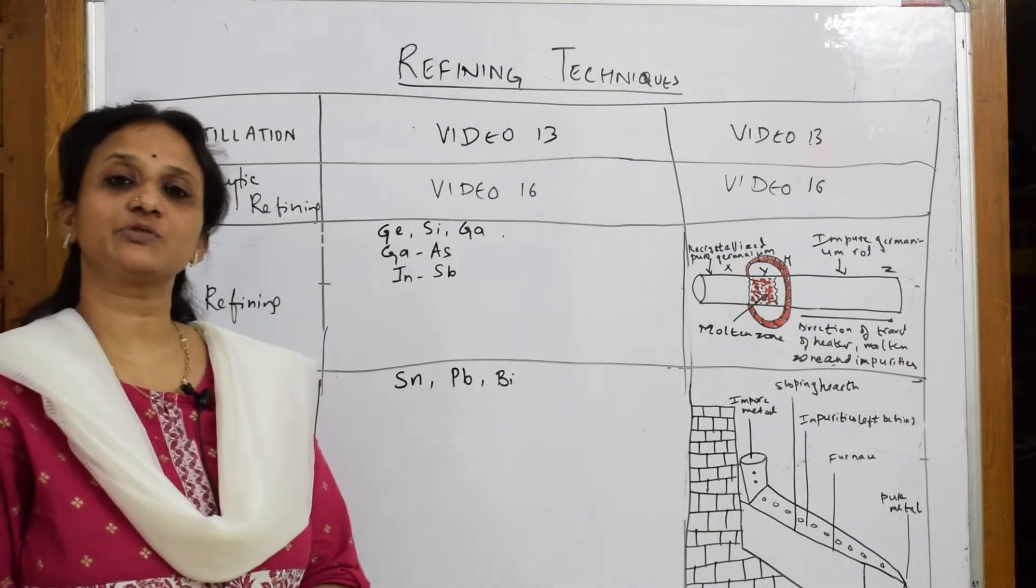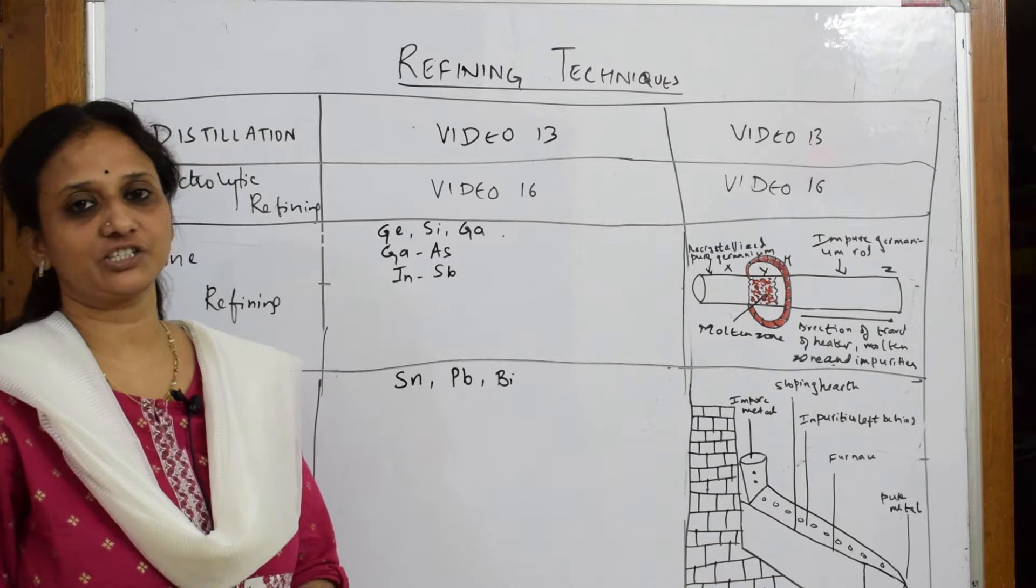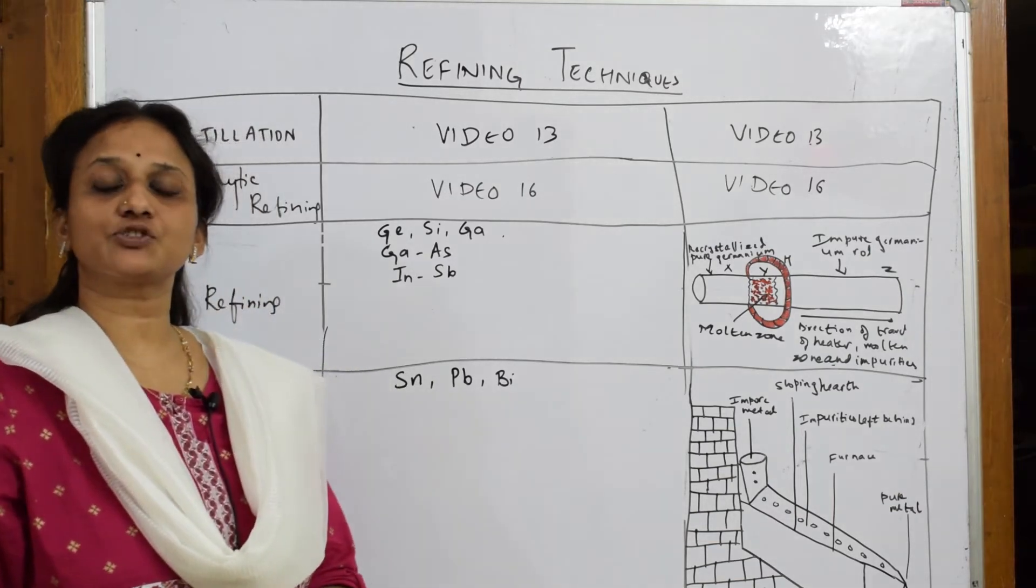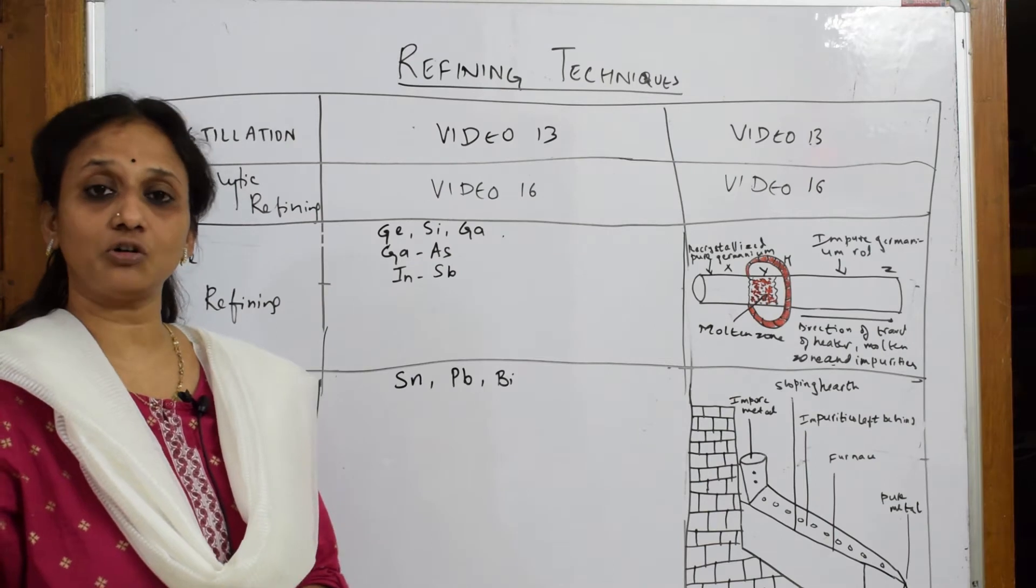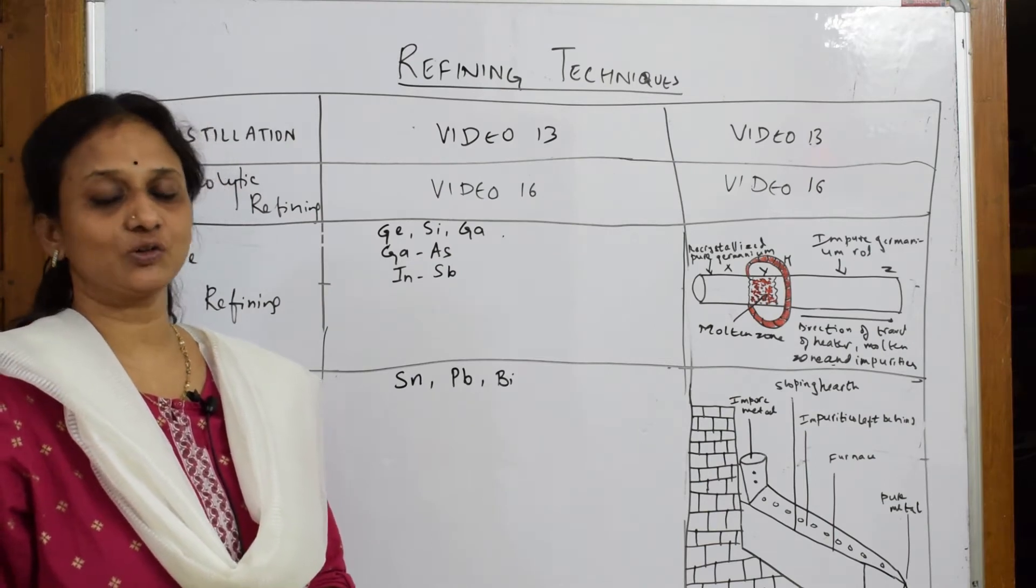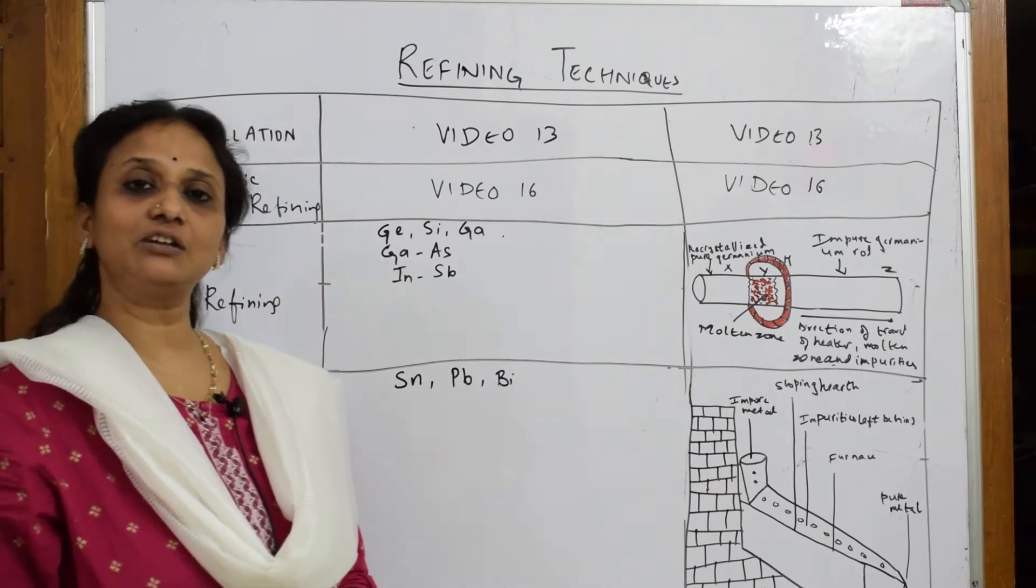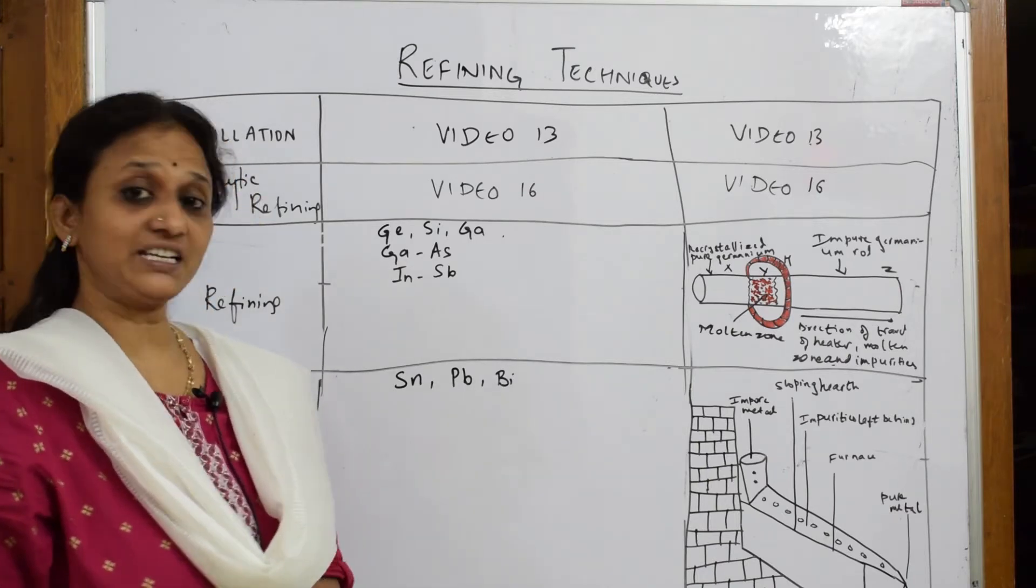Let us come back and start with the refining techniques of the metallurgy chapter. Till now we have learned extraction of iron, zinc, aluminum, copper, and silver. All these are covered in a very detailed way, and now we're coming to the end of the chapter on refining techniques.